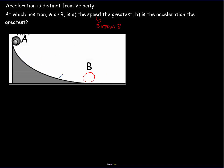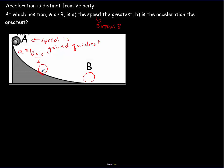However, the acceleration is greatest at the top, position A, where it's dropping nearly straight down — about 9.8 m/s², or roughly 10 m/s every second. Lower on the ramp, the surface supports the ball, so its acceleration is less — maybe 5 m/s every second. At the flat bottom, the acceleration goes to zero.